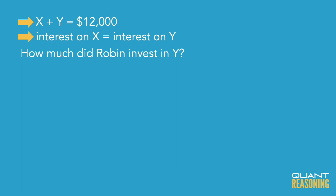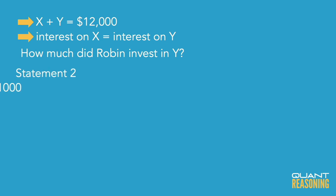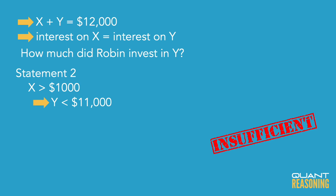I'd start with statement two, because it doesn't stand a chance of being sufficient on its own. It just tells us that X was more than $1,000, which means that Y was less than $11,000 — but how much less? I don't know. So statement two is not sufficient on its own, and we should eliminate the answer choices that claim that it is. So B and D are gone, and we're down to A, C, or E. Now statement one is a lot more interesting — let's evaluate that right after the intro.